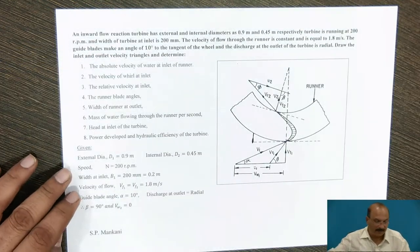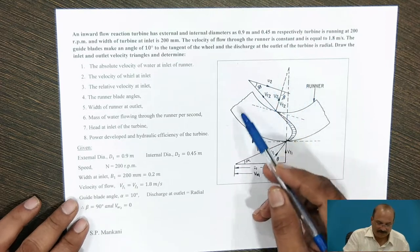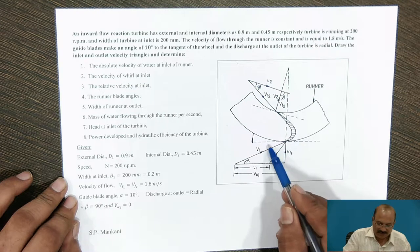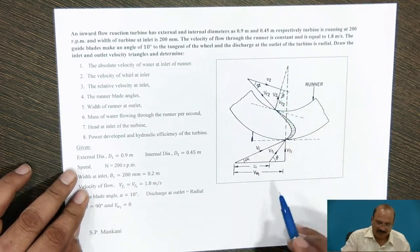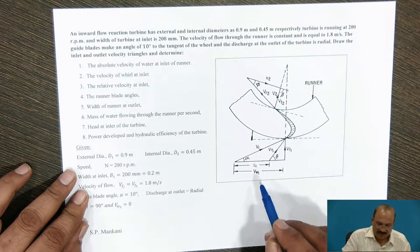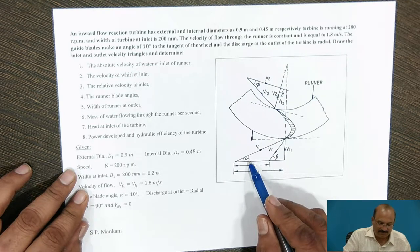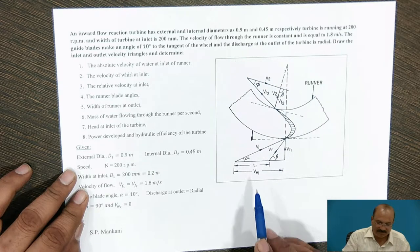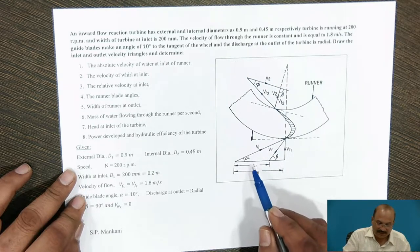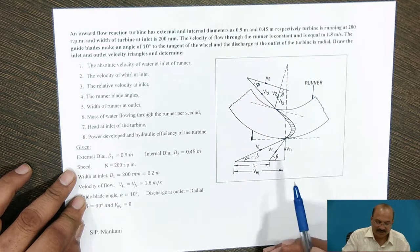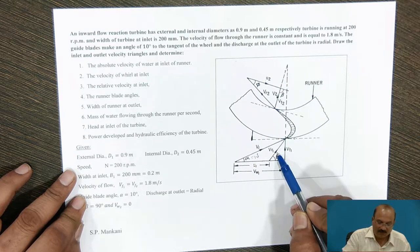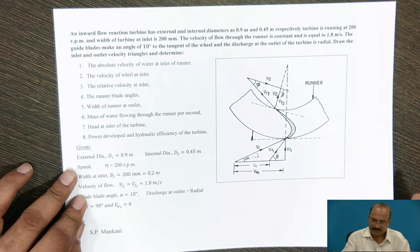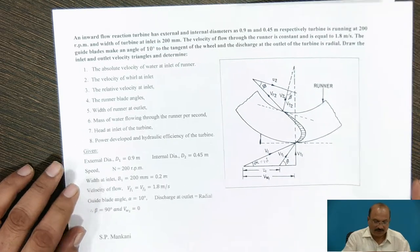We are going to represent the velocity triangle for the reaction turbine — the inlet portion and the outlet condition. The alpha angle is given, along with D1, D2, N, B1, and alpha = 10 degrees. Based on this, we draw the velocity triangle from inlet to outlet and solve the values one by one.